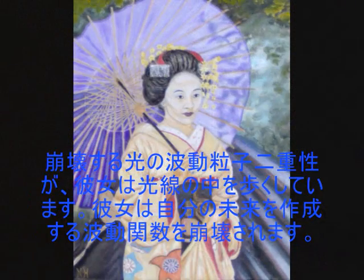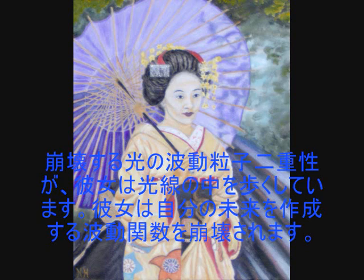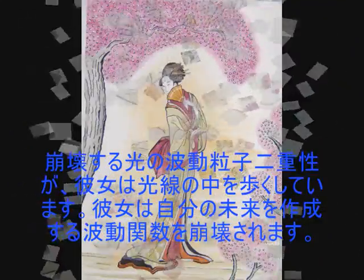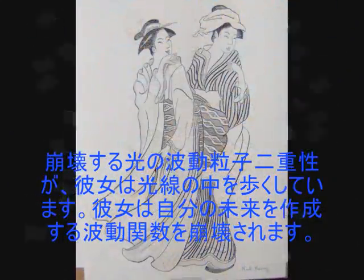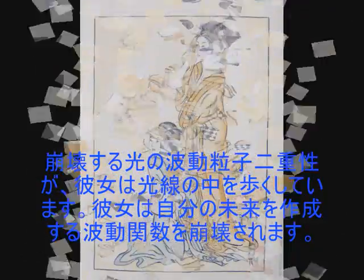This is very difficult to visualize, but in this oil painting of a geisha girl walking through sunlight, the wave-particle duality of light will collapse as she walks through the rays of light. She will collapse the wave function, creating her own future space-time.